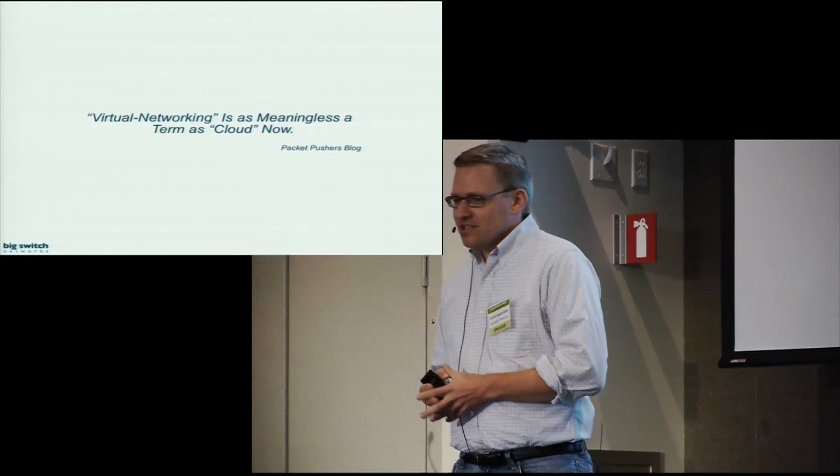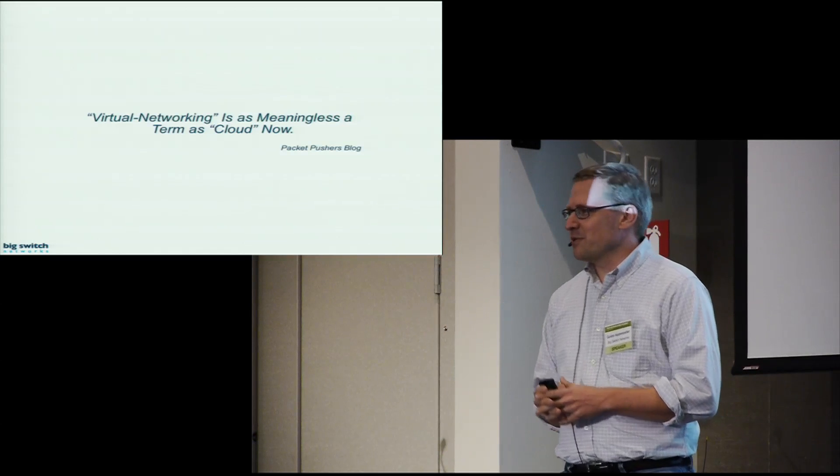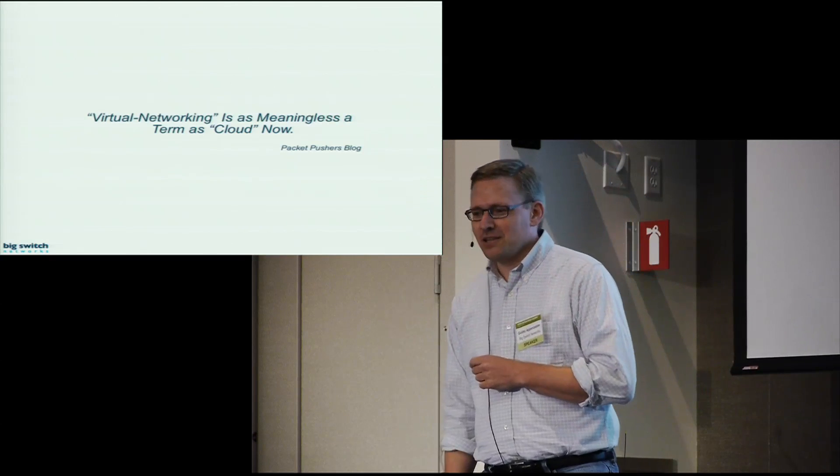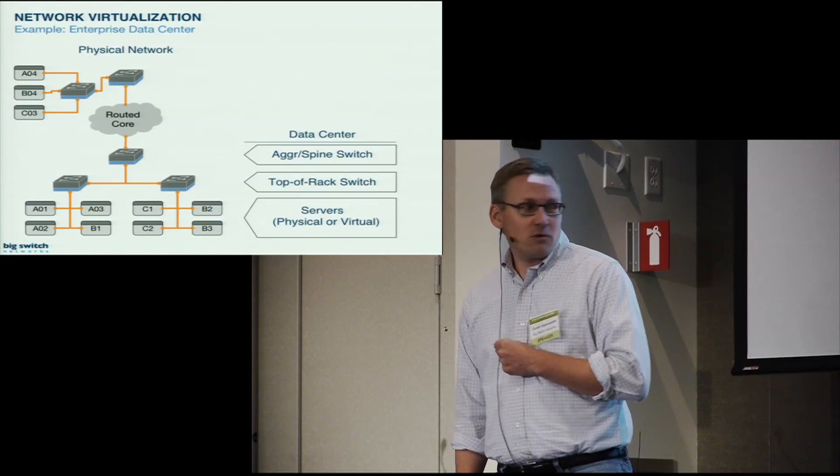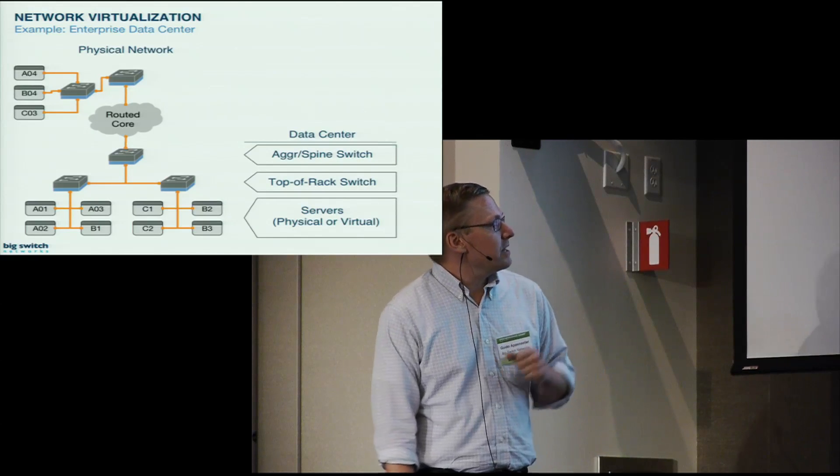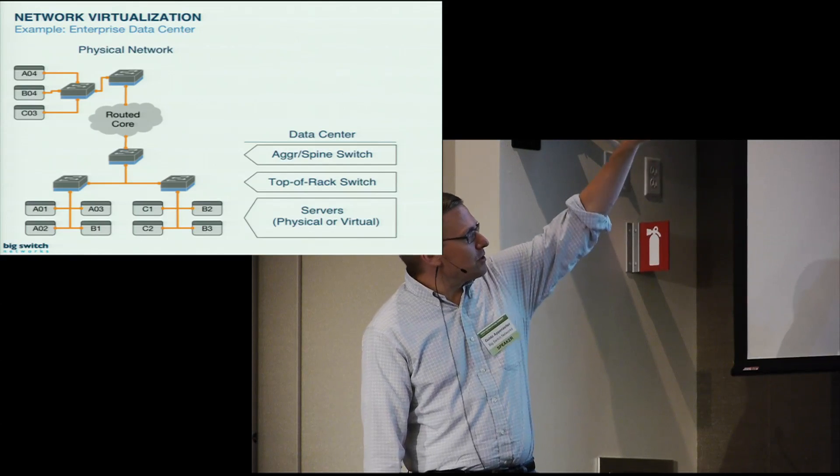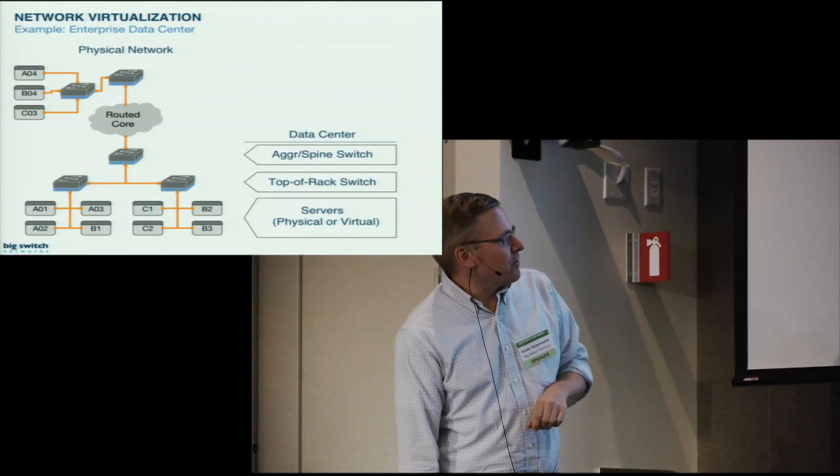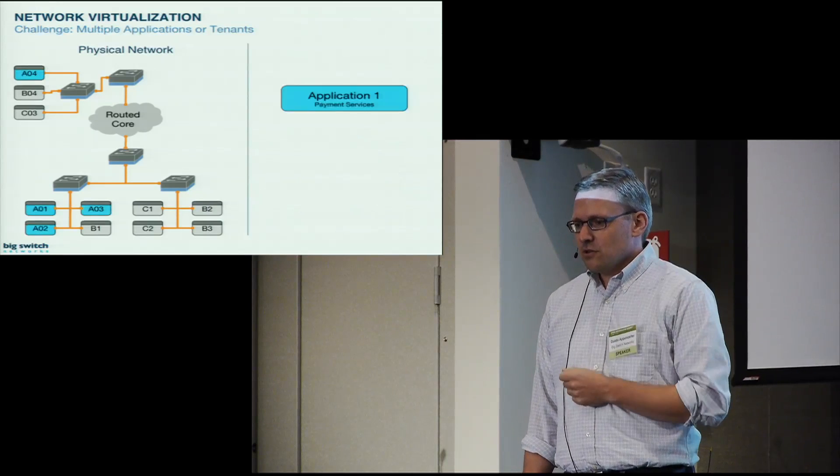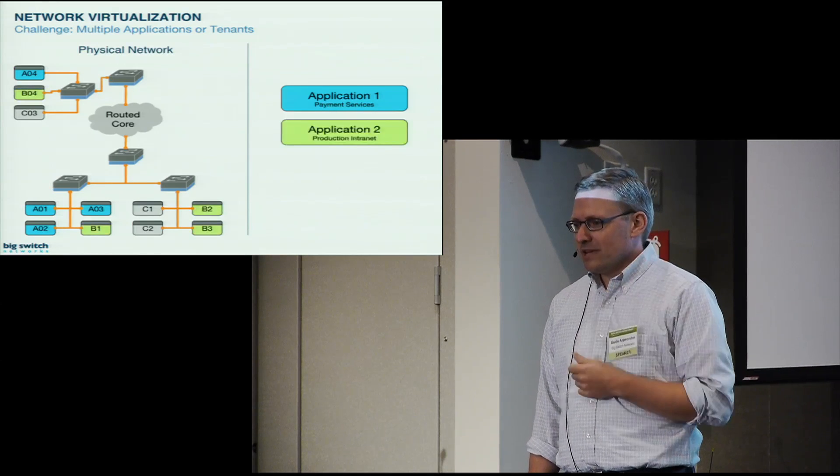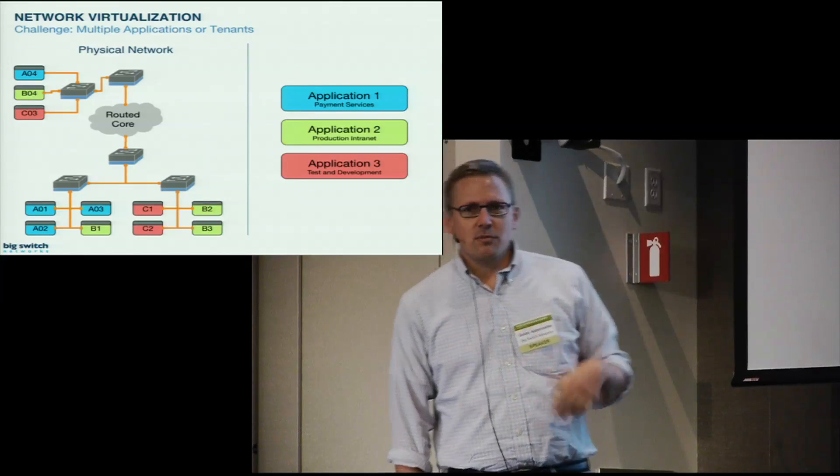Let me define what network virtualization is. This is a quote from Packet Pushers' blog, which I think is great. At this point, virtual networking is very widely used and means different things to different people. When we talk about network virtualization, what we're thinking of is basically you have a simple network architecture - you have a routed core, you have an aggregation in the top of rack layer, there might be hypervisors. In this topology, we have different applications: a blue application, a green application, and a red application. They all have certain servers - they might be physical, they might be VMs.